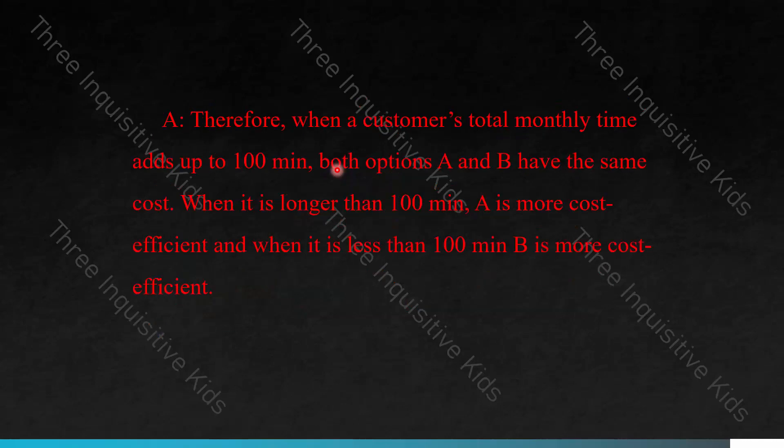When a customer's total monthly call time adds up to 100 minutes, both options A and B have the same cost. When it is longer than 100 minutes, A is more cost-efficient. When it is less than 100 minutes, B is more cost-efficient.